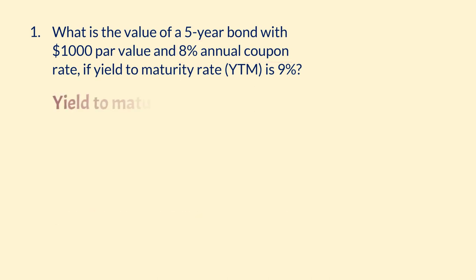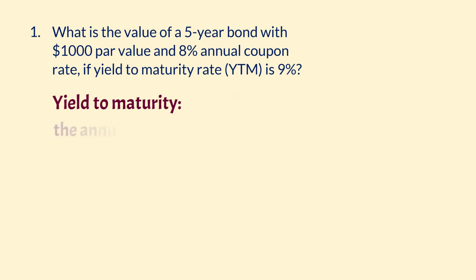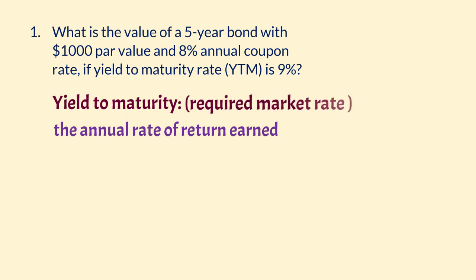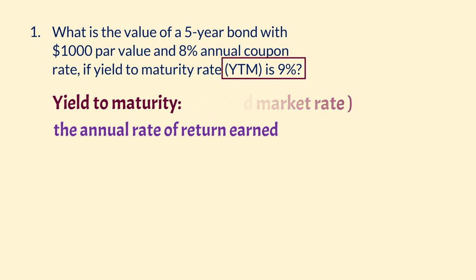The yield, or Yield to Maturity, also called promised yield, is the annual rate of return earned if the bondholder holds the bond till maturity. The bond yield is also described as the required market rate on a bond. In this example, that rate is 9%.